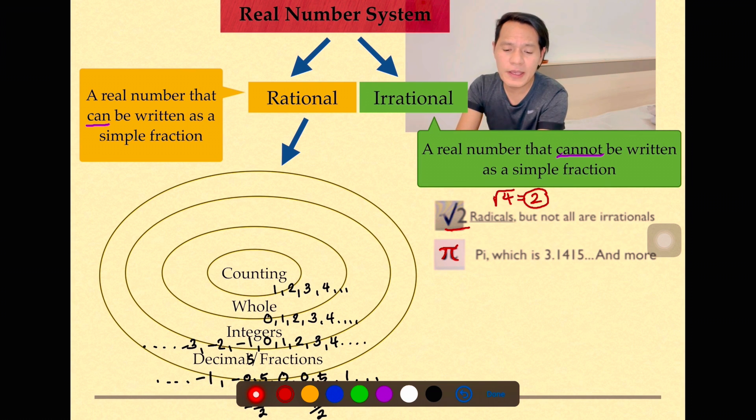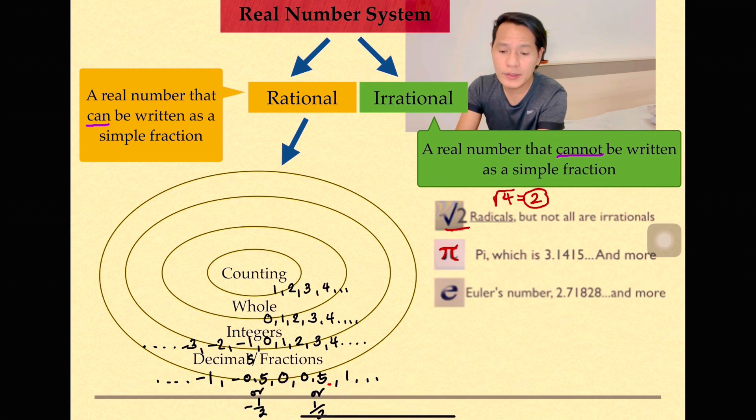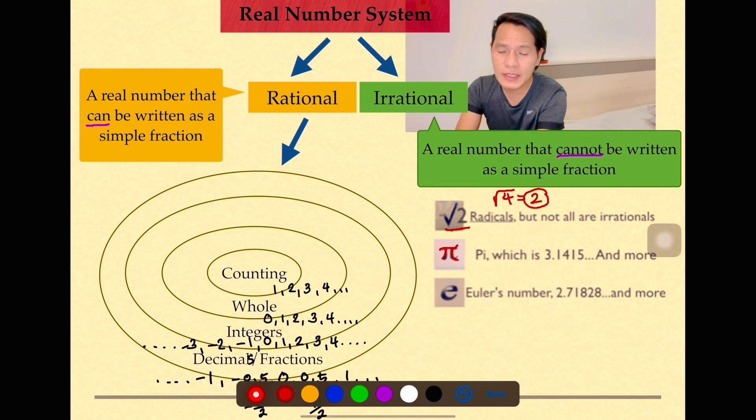And another thing here, we have Euler's number. This is really its value. It's continuous. Actually, there you see. Euler's number, this notation here. That's Euler's number.